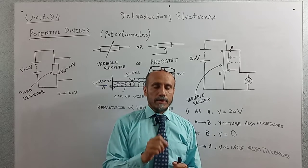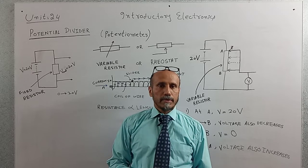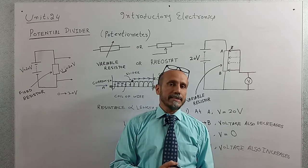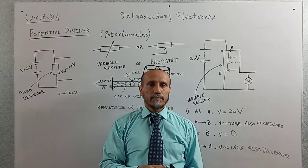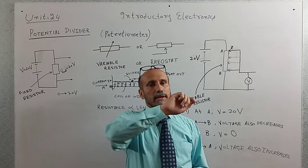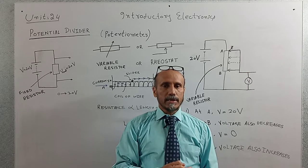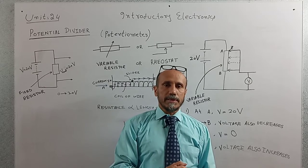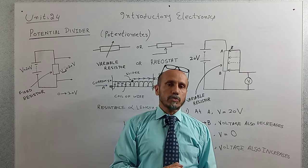A practical example of a potential divider in daily life is the dimmer switch used to control the speed of fans at home. Without a dimmer, the fan runs at a constant speed. When we move the dimmer clockwise, the resistance decreases, causing voltage to decrease, and the fan speed decreases. When we move it anti-clockwise, resistance increases, voltage increases, and the fan speed increases.